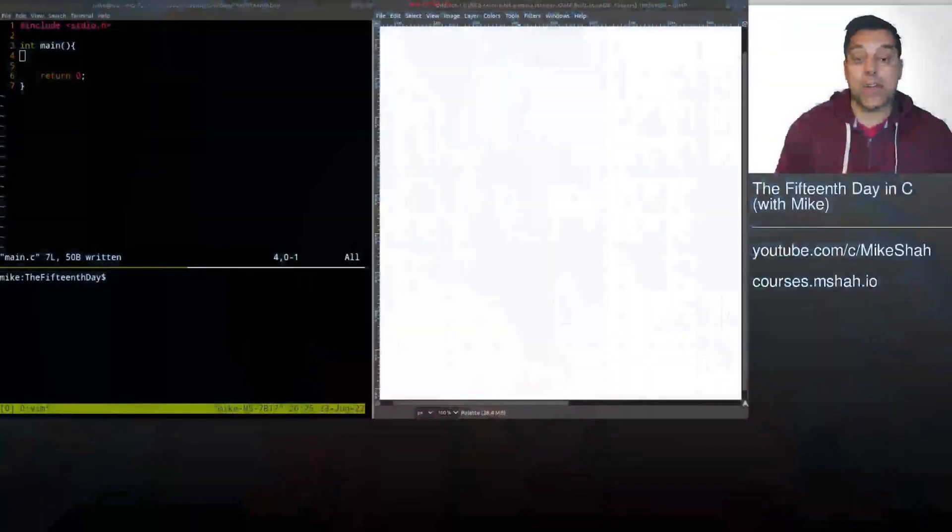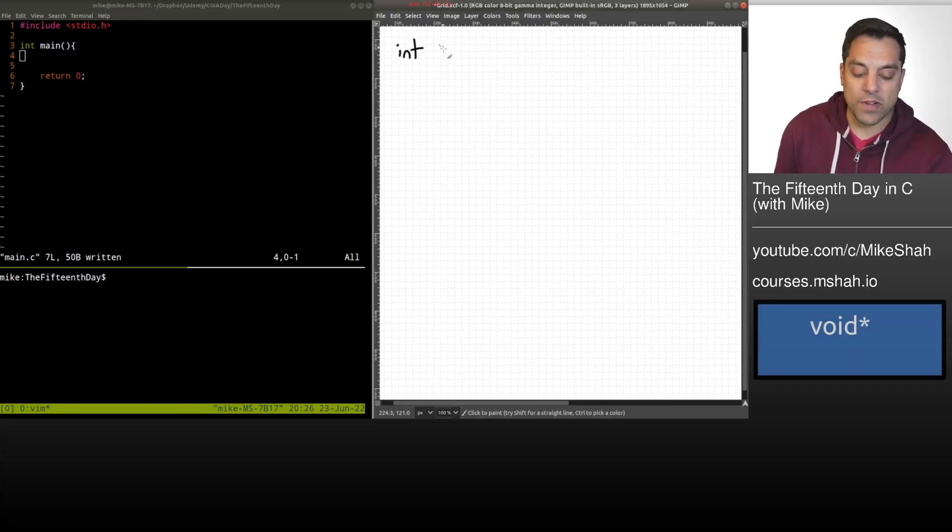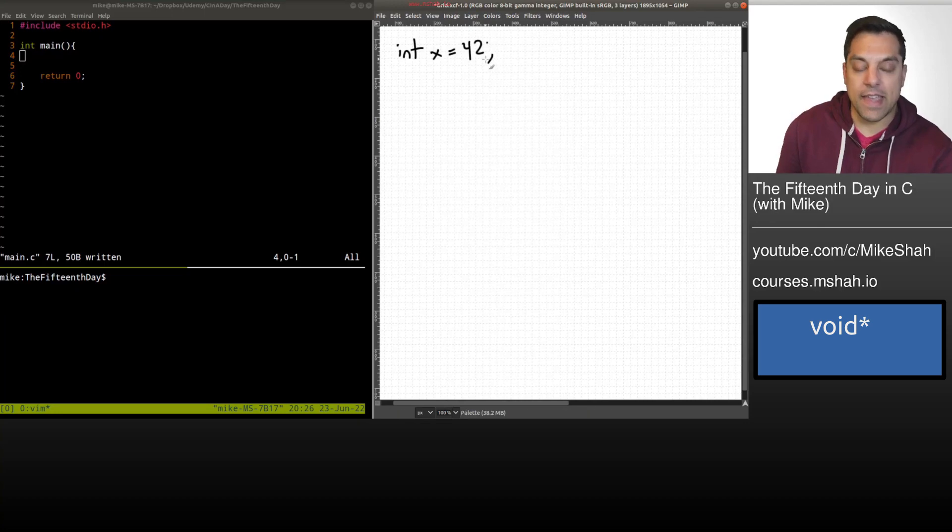Before we dive in, let's give a little bit of a review of pointers just in case you're still catching up or getting practice with them. Let's say I have some variable here like x with a value of 42. So I'll represent that here x, I've got the value 42 in this memory location. And I have some address here, let's just say it's 800.